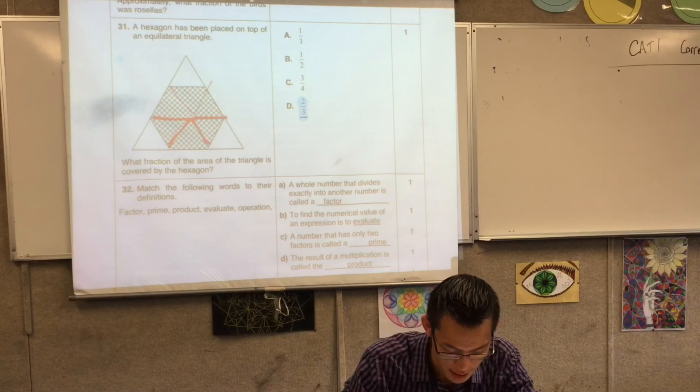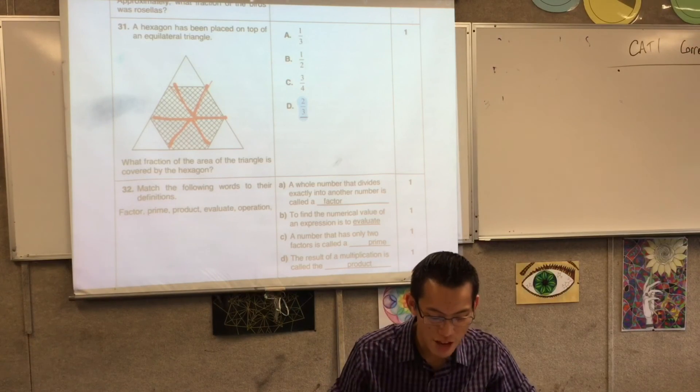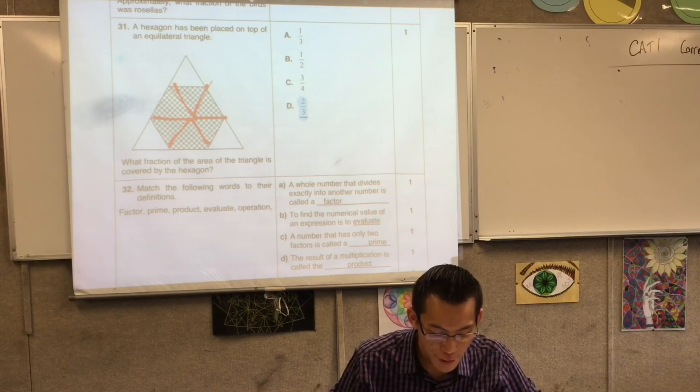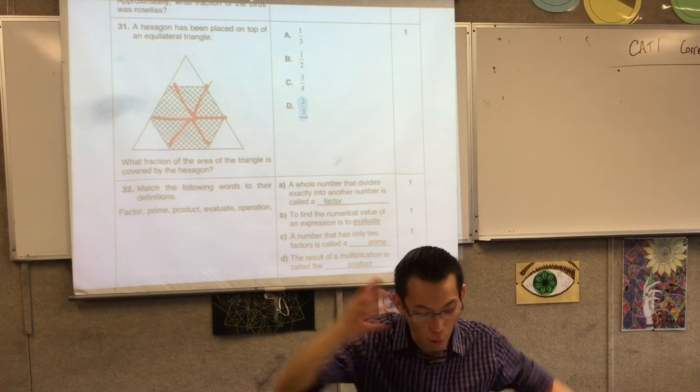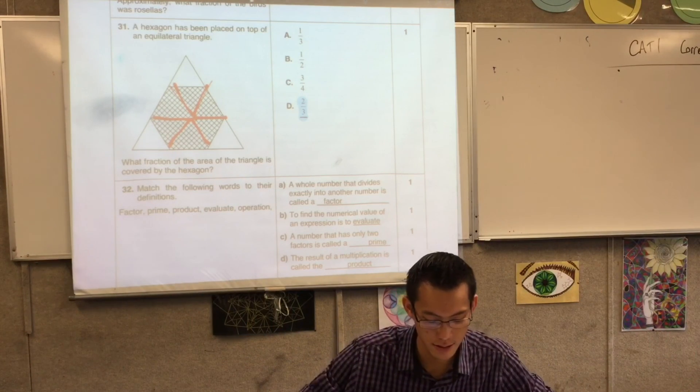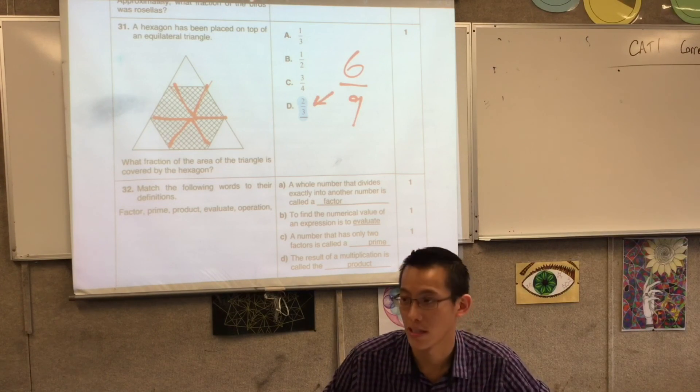Raise your hand if you had something like that. Yeah, excellent, okay, fantastic. From there you can see, oh look, I've got six triangles in the hexagon, but the whole big triangle has nine triangles. So if you have six divided by nine, that converts into two-thirds.